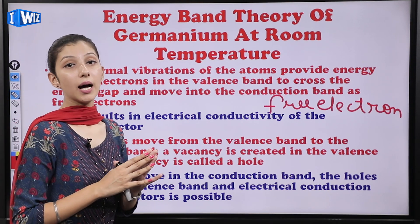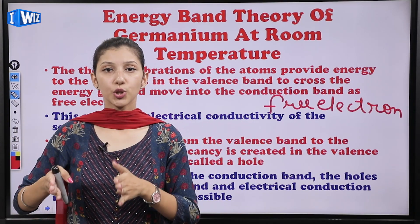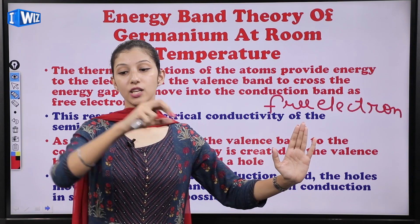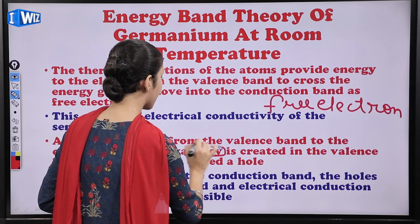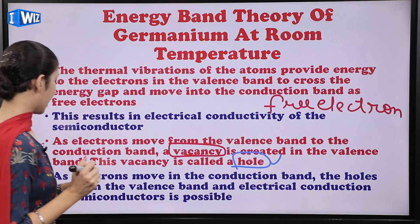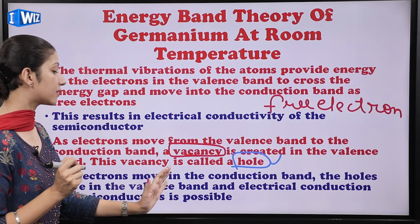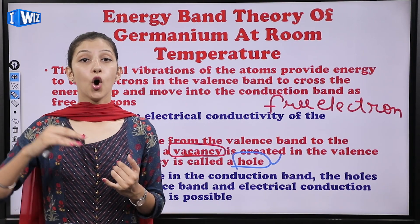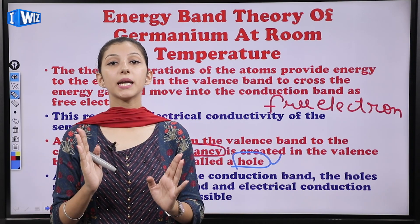This vacancy is called a hole. As electrons move in the conduction band, holes move in the valence band, and electrical conduction in the semiconductor is possible. In semiconductors, we have two types of charge carriers: electrons in the conduction band and holes in the valence band. Electrons have movement in the conduction band and holes have movement in the valence band, which means we have current.